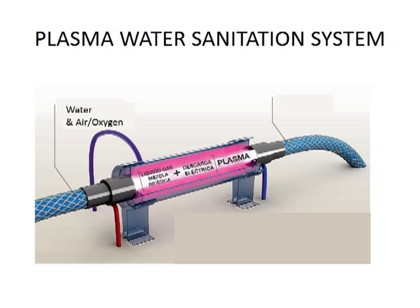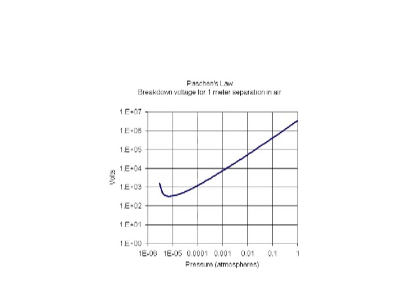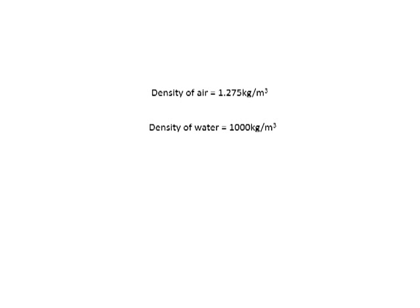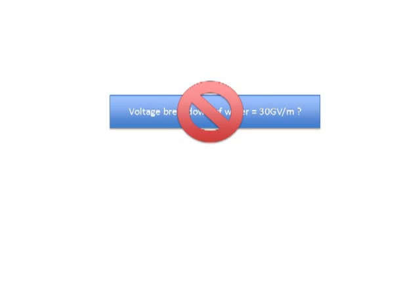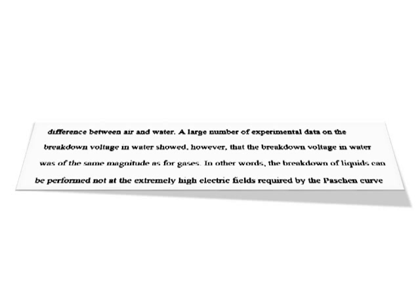How can water be used to create a plasma? Typically, a voltage breakdown of 30 MV per meter is required for air at one atmosphere. Based on the difference in density of water and air, one would expect the voltage breakdown of water to be three times higher in order of magnitude than in air. However, an extensive amount of experimental data has been collected on the breakdown voltage of liquid water. It shows that the breakdown voltage in water is of the same magnitude as for several gases. The breakdown of liquids can be performed not at the extremely high electric fields required by the Paschen curve, but at those that only slightly exceed the breakdown electric fields of molecular gases at atmospheric pressure. This is possible due to the fast formation of gas channels in the body of water under the influence of an applied high voltage. When formed, the gas channels give the space necessary for gas breakdown inside water, explaining why the voltage required for breakdown in water is of the same magnitude as required for gases.